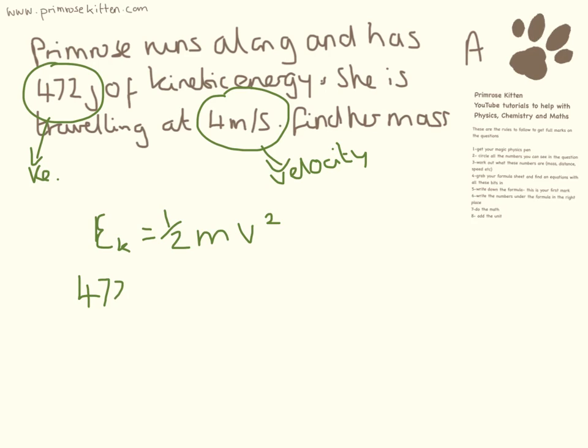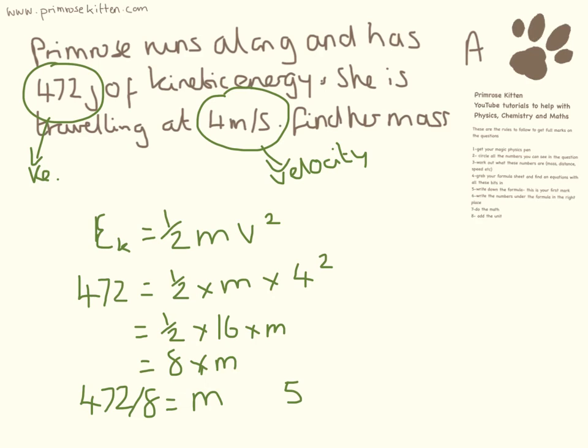So we have 472 equals half times mass. That's the bit we're trying to find out. Times velocity squared. So I've just worked through the numbers there. Now we need to rearrange the equation. So 472 divided by 8 equals 59 kilograms.